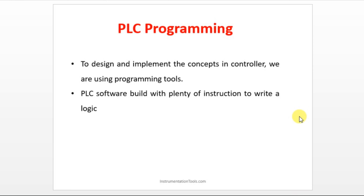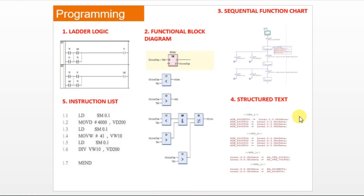Let us see what are the five. We have ladder logic, which is a more familiar and widely used programming method. The second one is functional block diagram. The next is sequential function chart. The next is structured text. And the last one is instruction list.